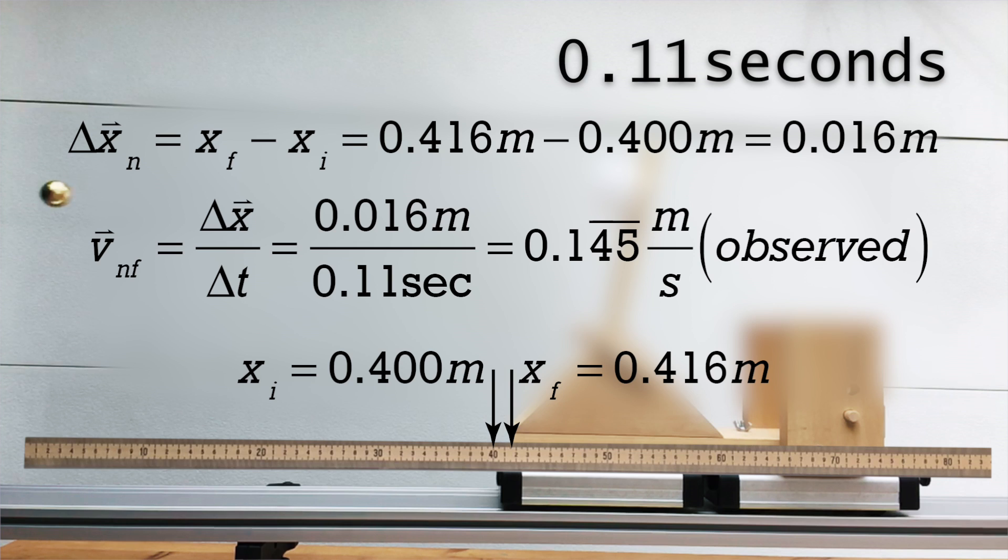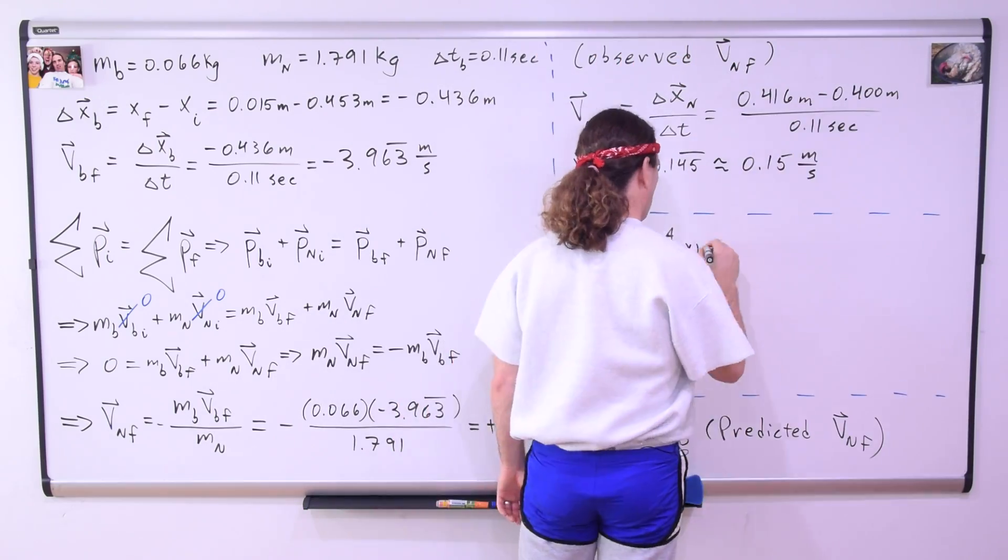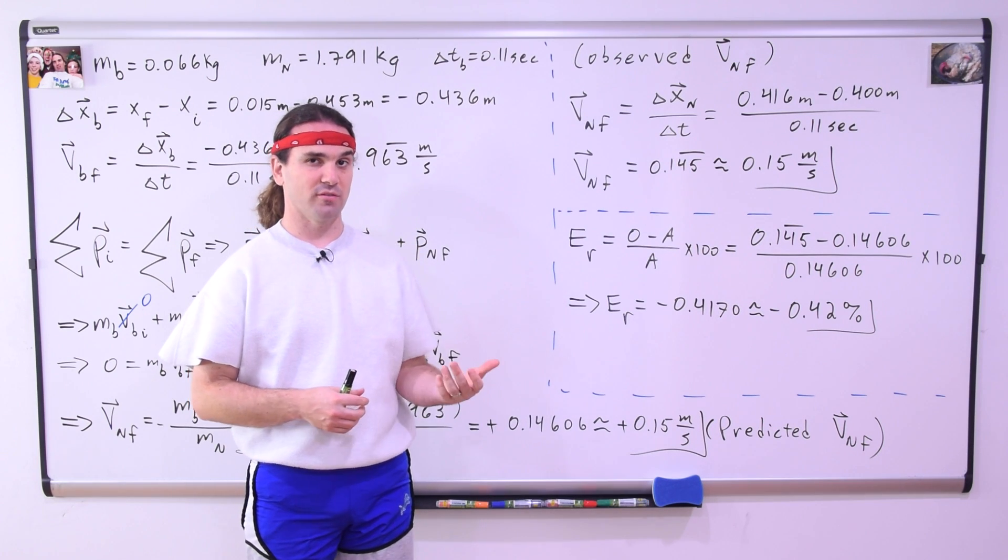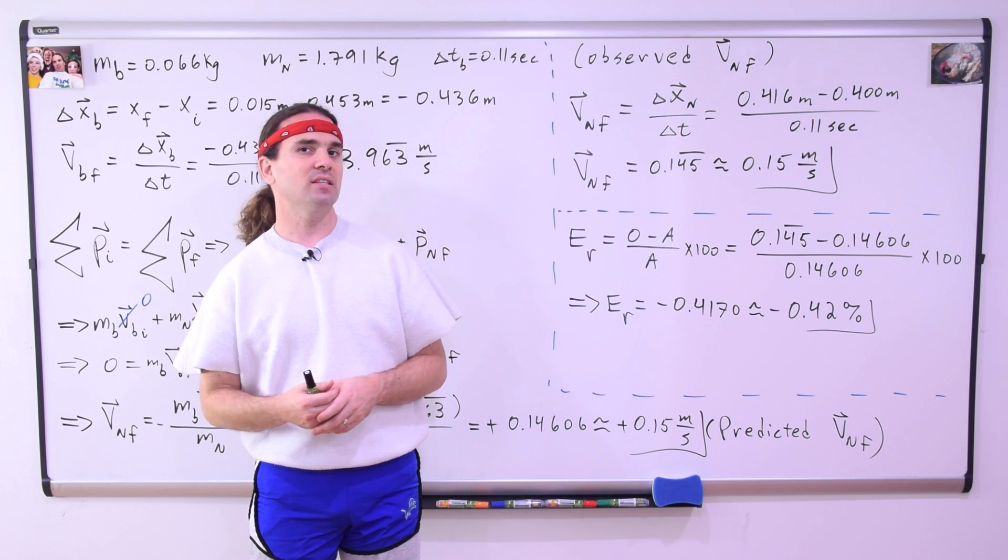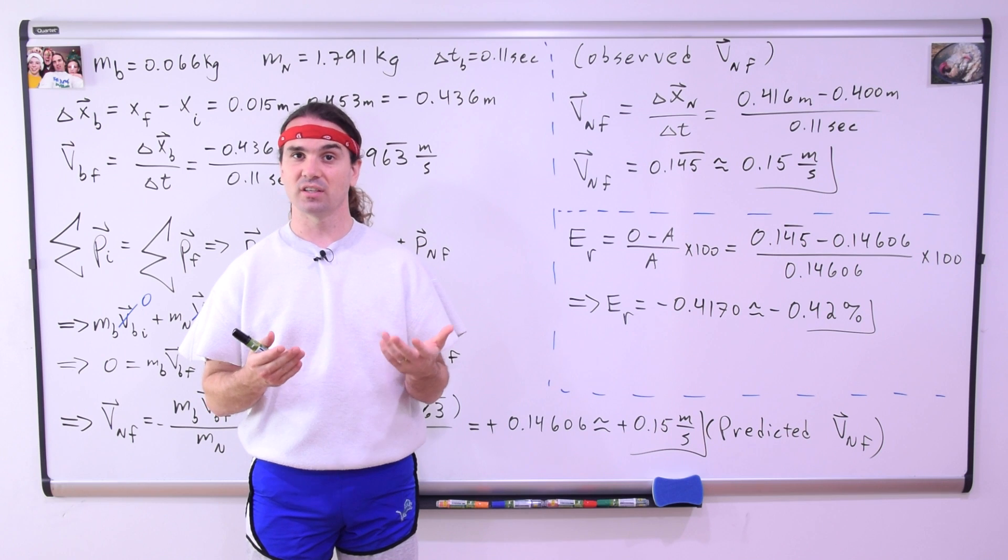And let's use the relative error formula to determine how far our prediction is from the measured value. Using our measured value as the observed value and our predicted value as the accepted value, we get a relative error of negative 0.42% with two significant digits.